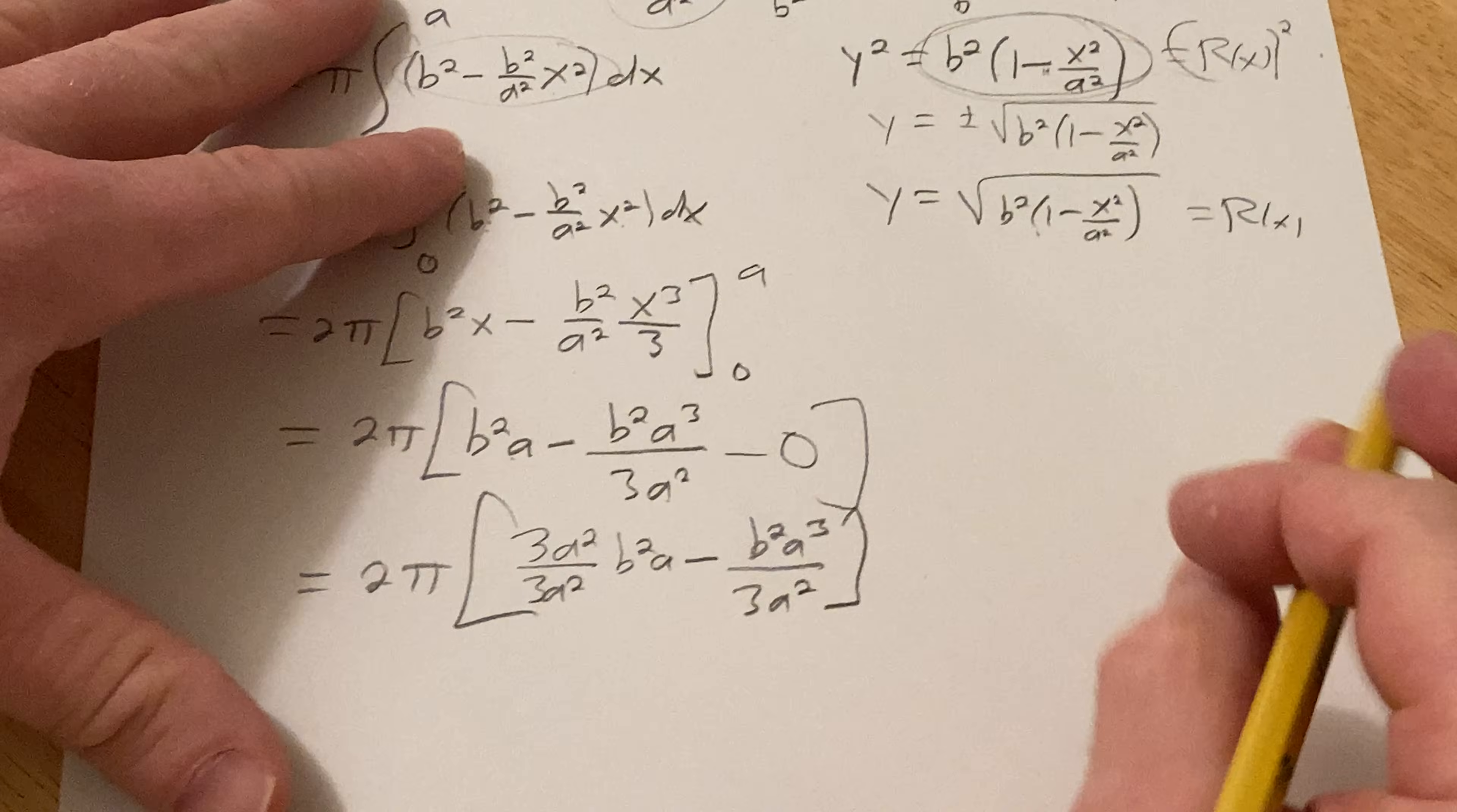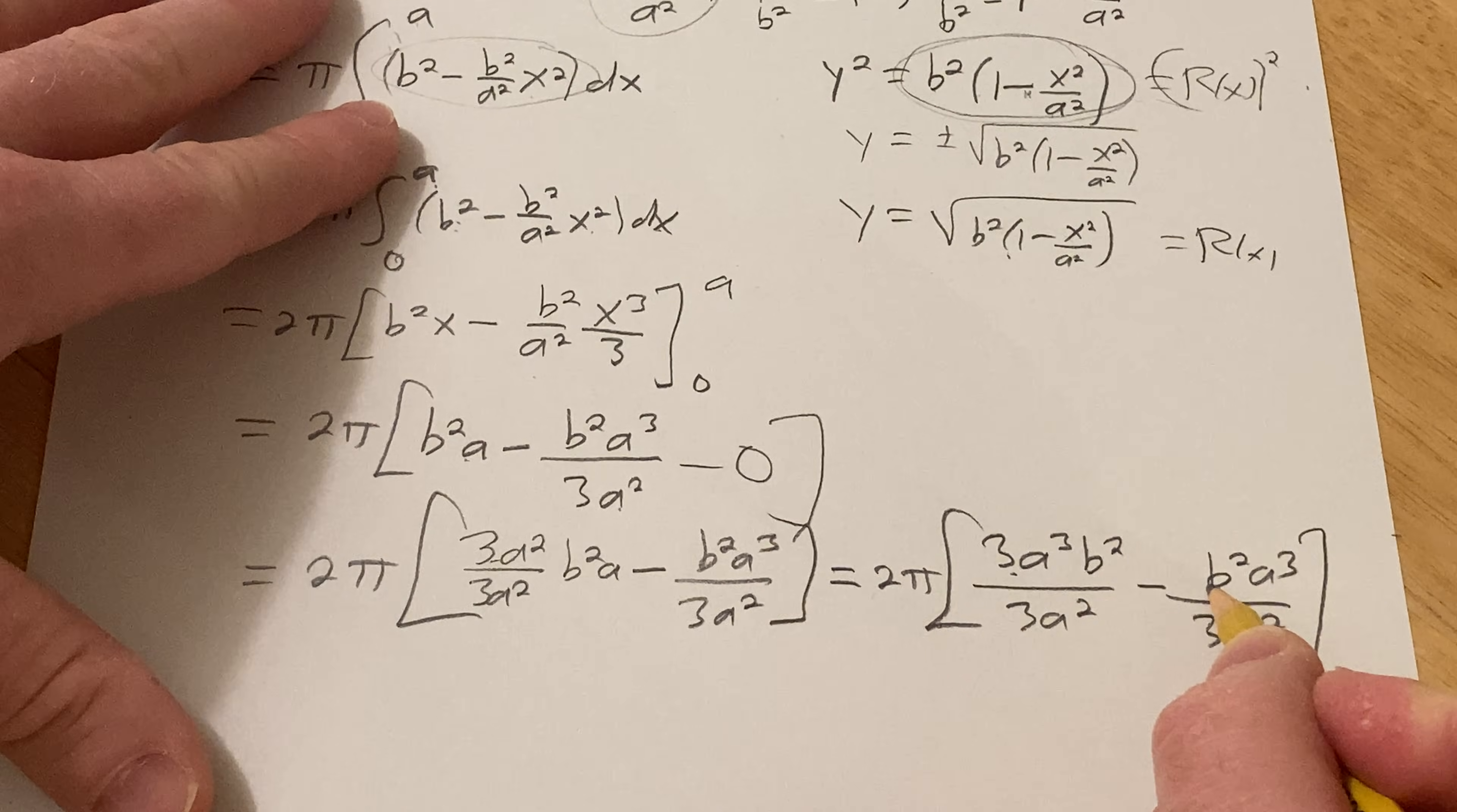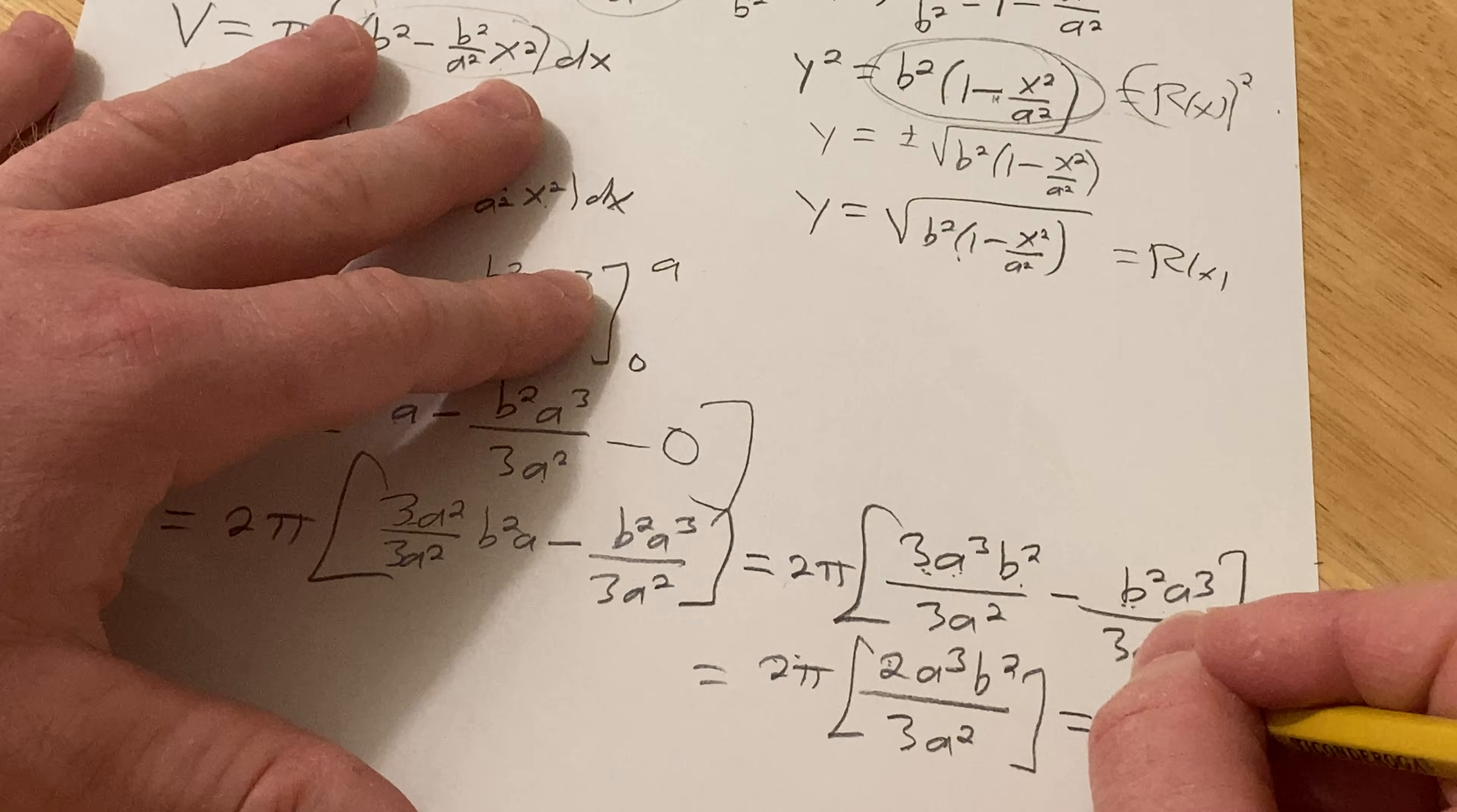All right, so this is pretty messy. Let's go ahead and try to write it as a single fraction. This will be two pi. Okay, two pi. And basically, I'm going to take this and multiply it by three a squared over three a squared like this. This will be three a squared over three a squared times b squared a minus b squared a cubed over three a squared. Just to get a common denominator here so we can work through it. So this is equal to two pi. This will be three a cubed b squared over three a squared minus b squared a cubed over three a squared. So we have three of these minus one of these. This is a cubed b squared. You have three a cubed b squared minus one a cubed b squared. It's going to give us two a cubed b squared. So you have two pi, two a cubed b squared over three a squared. So that's going to be four, right? Two times two is four. So we're going to get 4 pi.